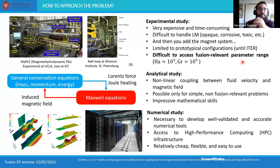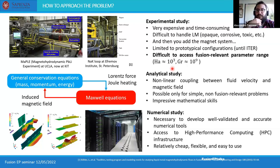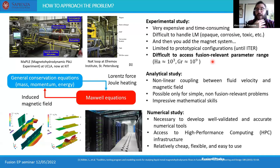One critical difficulty is accessing fusion-relevant parameter ranges. Even at the most state-of-the-art facilities in Europe and worldwide, it is not possible to reach a Hartmann number larger than 10^3 — one order of magnitude less than what we expect in a fusion reactor. Another challenge is related to volumetric heating in the reactor due to neutron bombardment, which is very challenging to recreate in the laboratory. The usual way to heat an electrically conducting fluid by injecting current and using the Joule effect cannot be applied in an MHD problem as it would change all the features of interest.